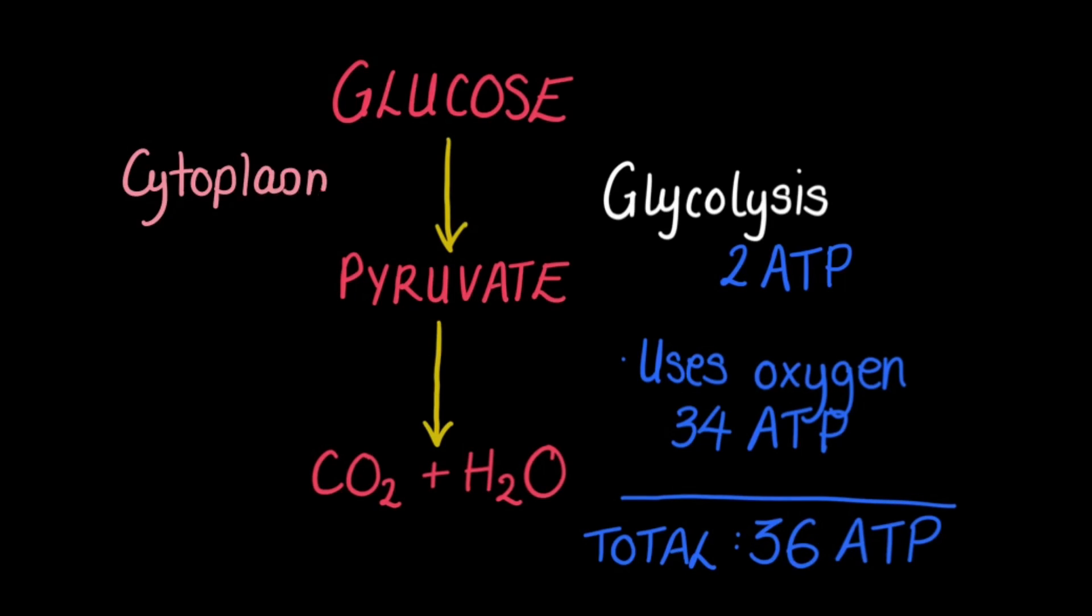As a reminder, since aerobic respiration involves glycolysis, glycolysis takes place in the cytoplasm, while this second stage takes place in the matrix of the mitochondrion.